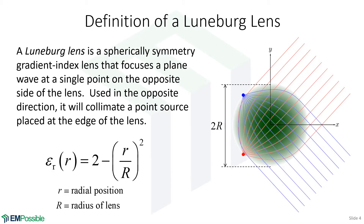Since this is spherically symmetric, we could do a similar thing in a whole different direction — shown in blue — and that wavefront would come into the lens and be perfectly focused at the other side. This also works in both directions. If we place a little dipole source on the surface, it would radiate in all directions, and whatever radiated toward the sphere would come out collimated. A lot of times you'll see Luneberg lenses placed on the end of an antenna to collimate it and give the beam more directivity.